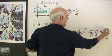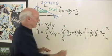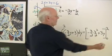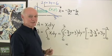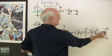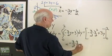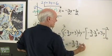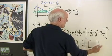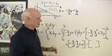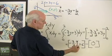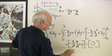I evaluate that from y equals 0 to y equals 2. Substituting y equals 2: negative 3 halves times 4 over 2, plus 6. Substituting y equals 0: that gives 0. Simplifying: 2 divides in, giving negative 3 plus 6, which equals 3 again.